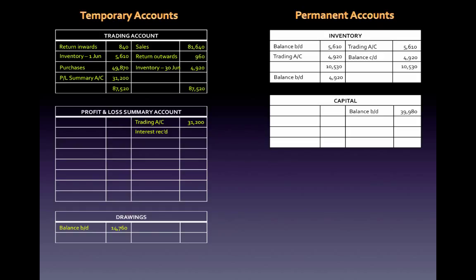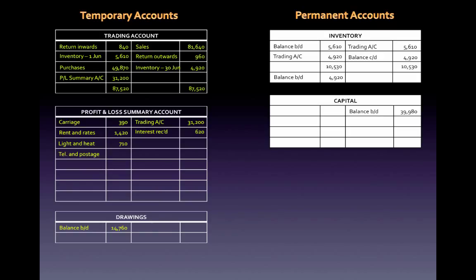We had interest received, which has a credit balance of 620 — the same process as sales. I debit the interest received account and credit the P&L summary. Then for expenses: carriage outwards had a balance of 390 — I credit carriage outwards and debit P&L summary. I do the same for rent and rates, light and heat, telephone and postage, print and stationery, and bank interest — crediting each expense account and debiting P&L summary. With that, all expense accounts are closed off.